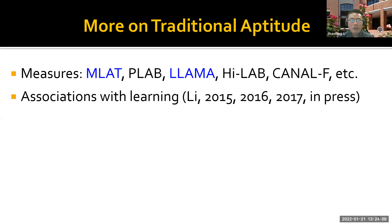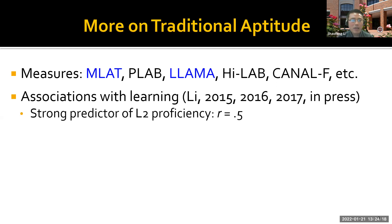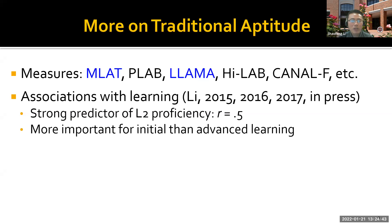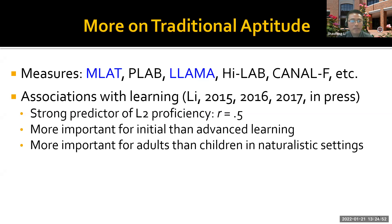In terms of predictive power, language aptitude has been found to be a strong predictor of second language proficiency, with an average correlation of 0.5 — which constitutes a strong effect based on benchmarks in both psychology and second language acquisition research. It is more important for beginning or initial language learning than for more advanced stages, and it's more important for adult learners than child language learners in naturalistic settings.